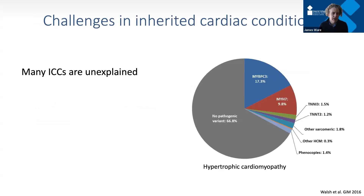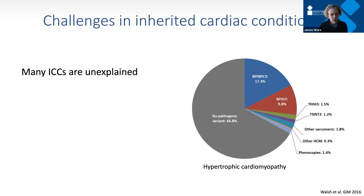There are major challenges we face. First, many inherited cardiac conditions are unexplained. This pie chart shows pooled results of thousands of genetic tests for people with hypertrophic cardiomyopathy, showing which genes were found to be faulty. The most striking feature is the gray — for most people, we don't actually find an answer. They're left unsure why they have the disease, and their families can't benefit from genetic testing.